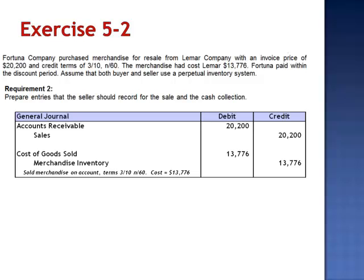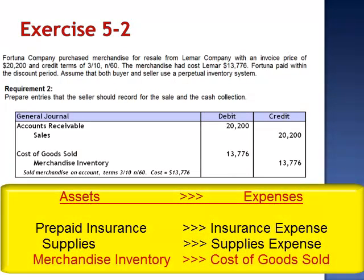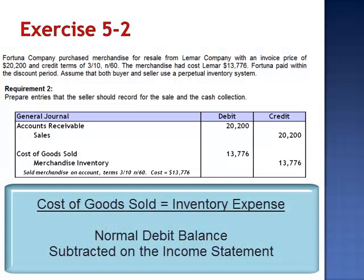Cost of goods sold is an expense account — in fact, it's usually a store's biggest expense — but it doesn't include the word 'expense.' Prepaid insurance turns into insurance expense; supplies turns into supplies expense. It would have been nice if merchandise inventory turned into merchandise inventory expense, but the name is cost of goods sold. Anytime you see cost of goods sold, think inventory expense.